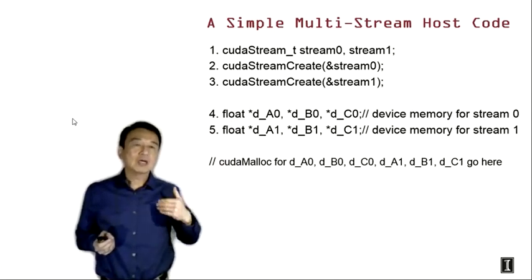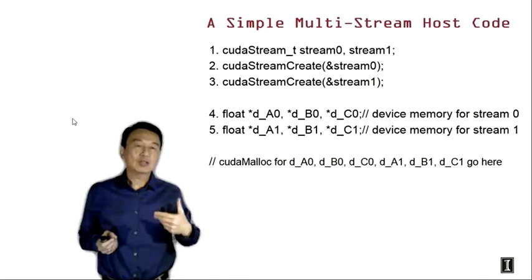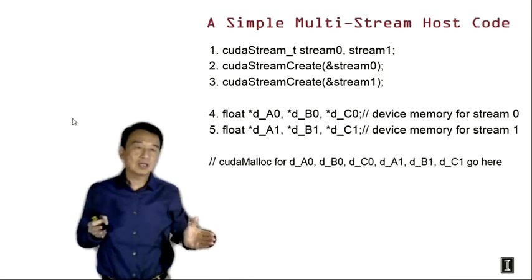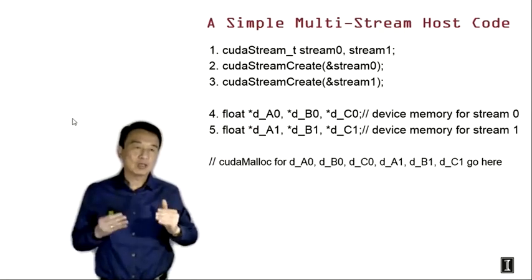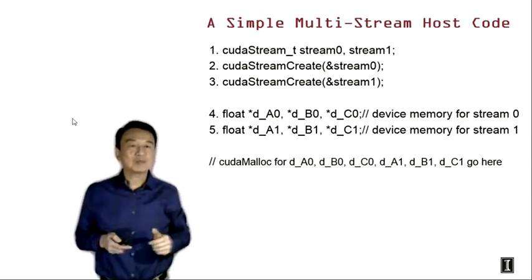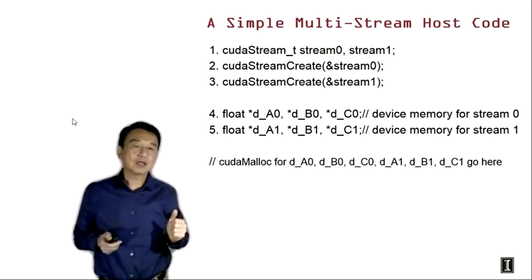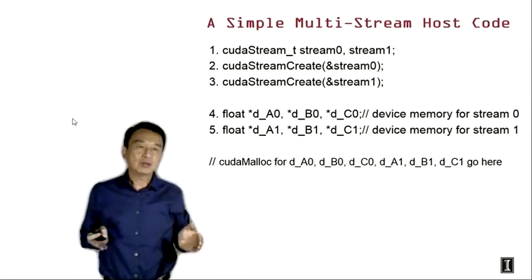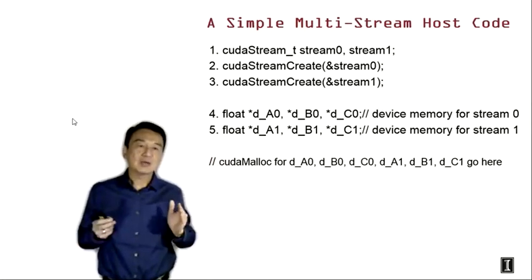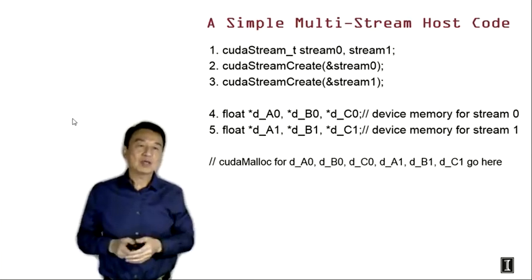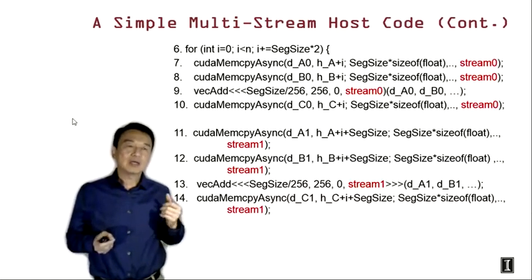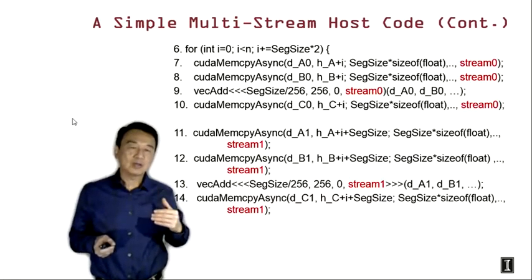When we use memory copy, kernel launch, and so on in the future, we can use one of these two stream handles to indicate which stream we would like to issue the tasks or commands to. Here we show that we can declare sections of the vectors for A, B, and C that we're going to use — segments — in order to achieve overlapping between communication and computation. Here we show the practical multi-stream host code to achieve some level of overlap between data transfer and computation.